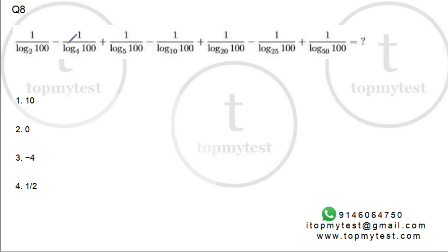It says 1 over log of 100 to the base 2 minus 1 over log of 100 to the base 4 plus 1 over 100 to the base 5 and so on equals how much? It's not an infinite series, it's a limited series.